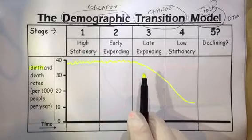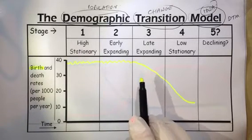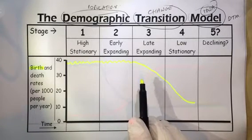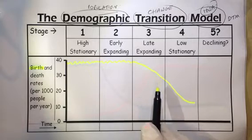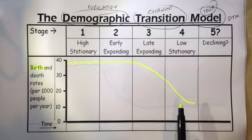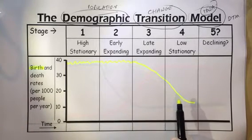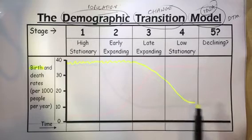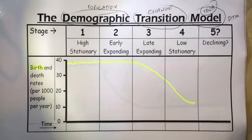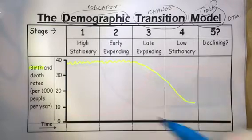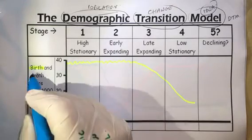Then over time, as the role and status of women increases and as the amount of contraception available in the country increases, the birth rate starts to fall through stage three — maybe countries such as Brazil might be in that stage at the moment. Then we have stage four, where maybe countries such as the USA, France, and the UK towards the end of stage four.